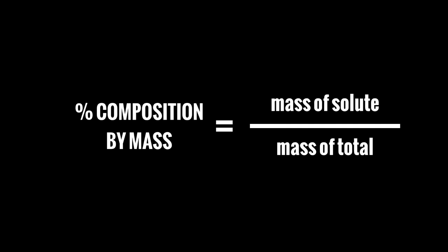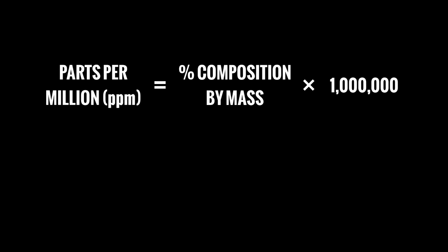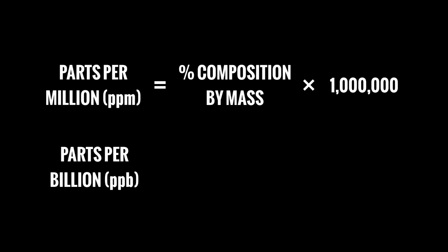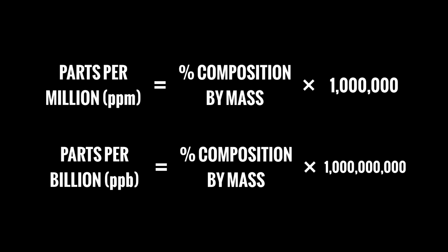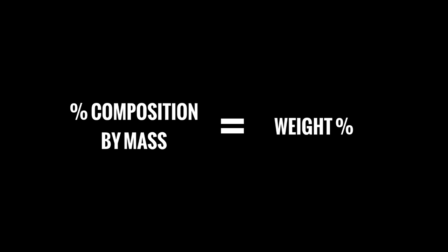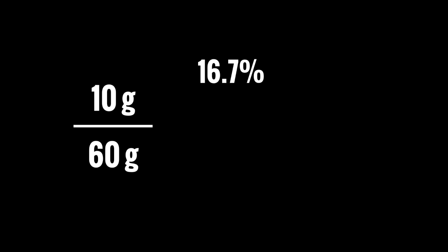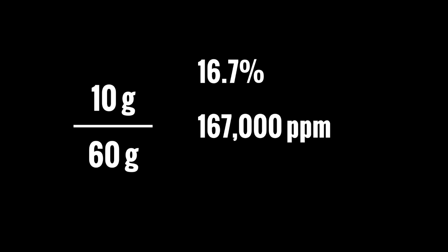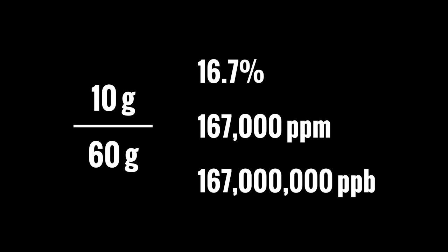Percent composition by mass is equal to the mass of the solute divided by the mass of the total. A lot of times this value is really small, so we have different units to reflect that. The first is parts per million, or ppm, equal to percent composition by mass multiplied by a million. Then we have parts per billion, or ppb, which is percent composition by mass times a billion. Note that percent composition by mass and weight percent are the same thing. For our original solution — 10 grams of NaCl in 60 grams total — that's 16.7%, which equals 167,000 ppm or 167 million ppb.